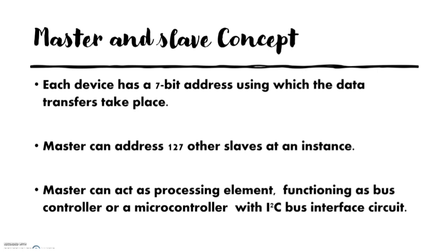A very important part of I2C is the master-slave concept. Each device connected to an I2C bus is assigned a 7-bit address. This address is very important because only if a device has an address can communication take place. A master can address 127 other slaves at an instant, meaning a total of 128 devices can be connected to an I2C bus at one time.